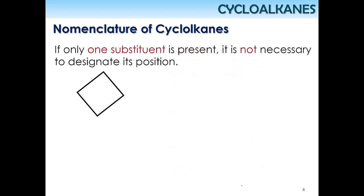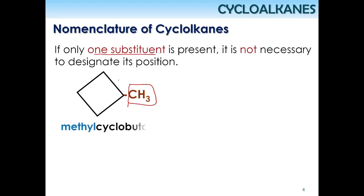If one substituent is present, it means there is one group attached to the cyclic compound. For example, a methyl group attached to cyclobutane. It is not necessary to designate its position number, so this should just be named methylcyclobutane. No need to write '1-methylcyclobutane' when only one substituent is present.